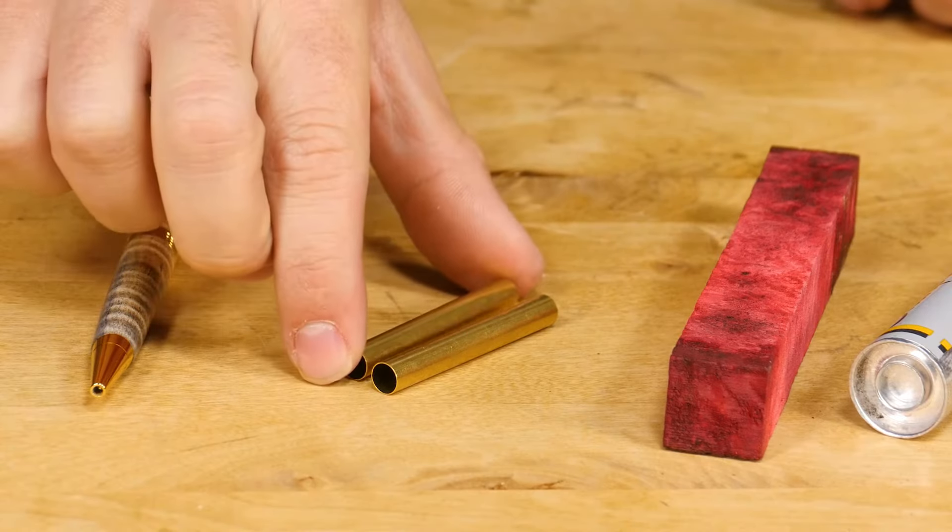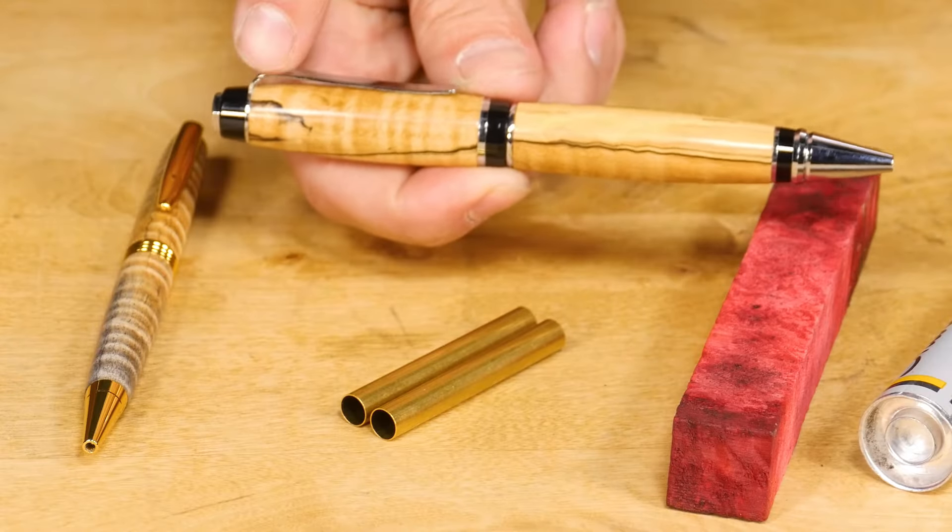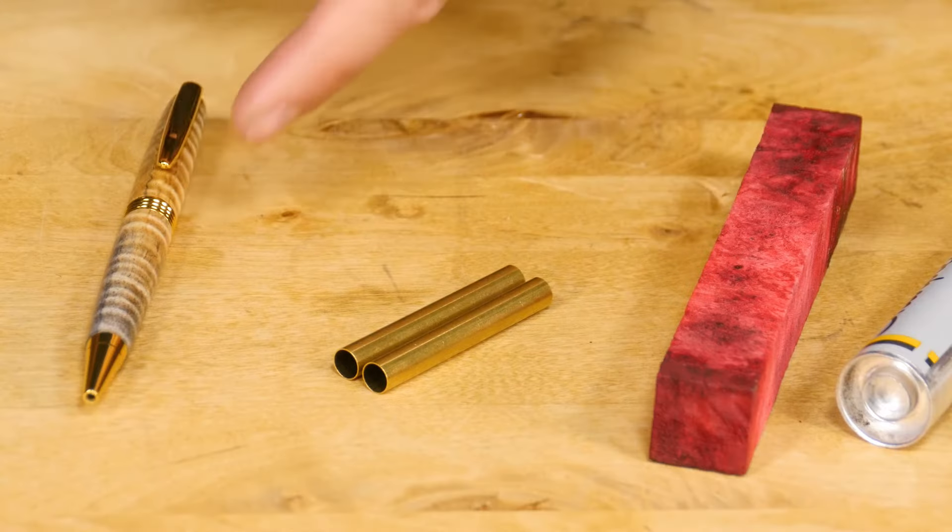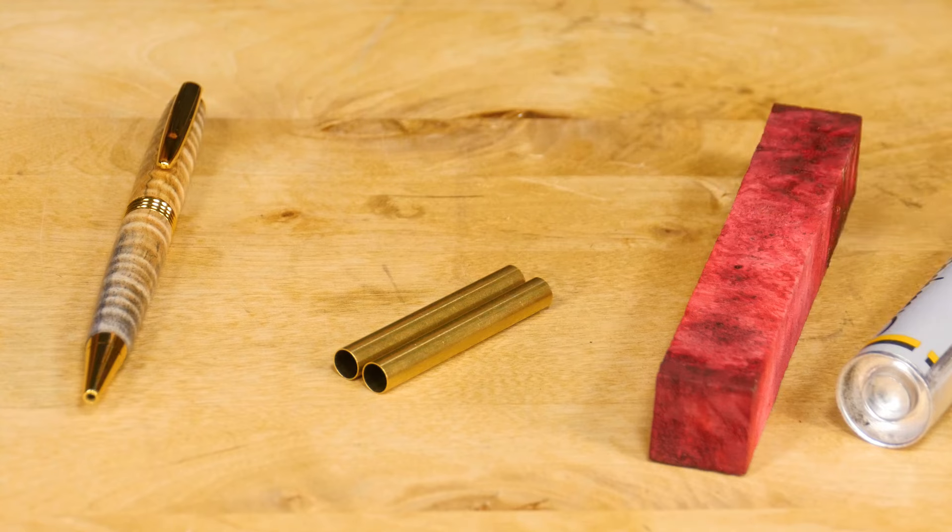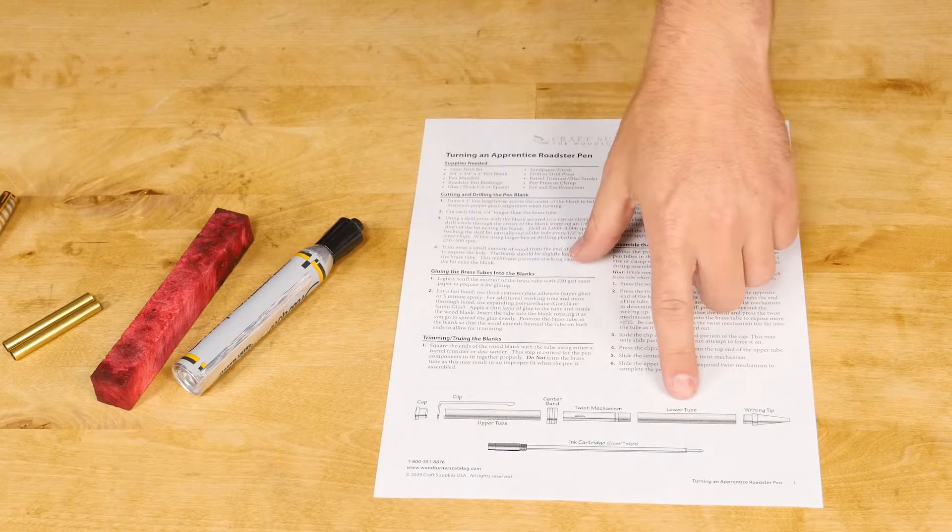Now grab the brass tubes that came with your pen kit and check their length. Some pens use brass tubes with different lengths for the top and bottom of the pen. With this pen, both tubes are identical, so it doesn't matter which is the top or bottom. If you are unsure, check the instructions that came with the kit.